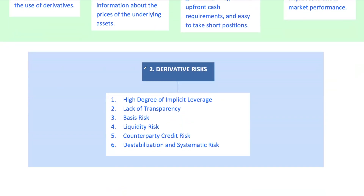But it's not all sunshine and rainbows. Derivatives come with their fair share of risks. The biggest: leverage. Derivatives allow investors to control large positions with relatively little capital, but this leverage cuts both ways. A small market movement in the wrong direction can mean big losses. This is why some derivative strategies, especially leveraged ones, can lead to financial distress. Another risk is lack of transparency — derivatives can be complex, and unless you fully understand how they're priced and what drives their value, you might be taking on risks you're not even aware of.